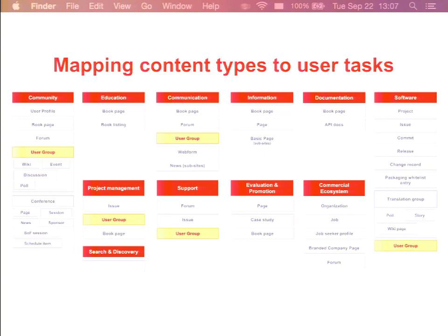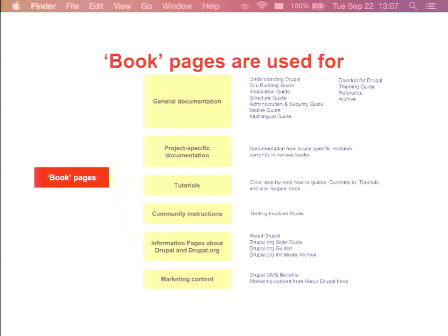If we take a deeper look at some overused content types, like book pages — they are used for many different things: general documentation such as understanding Drupal and multilingual guides, project-specific documentation, tutorials and step-by-step how-to guides, community instructions like getting involved guides, marketing content, and even to communicate the status of initiatives people run, which is really hard to do with a book page.